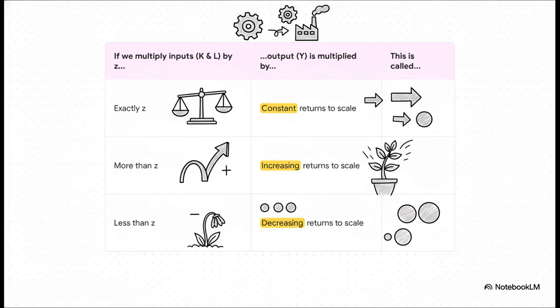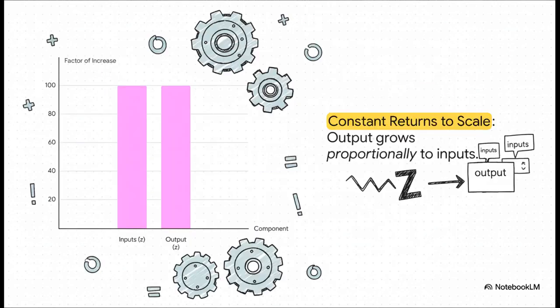Now, what if you double the inputs and you get more than double the output? That's awesome. That's increasing returns to scale. And finally, if you double your inputs and your output grows, but by less than double, that's decreasing returns to scale. Let's actually visualize this first one, constant returns to scale. Here, the relationship is just perfectly proportional. If you scale up your inputs by any amount, let's call that amount Z, your output goes up by that exact same amount, Z. So 10% more inputs, 10% more output. Pretty simple. And honestly, this is the assumption economists often make for a whole economy.